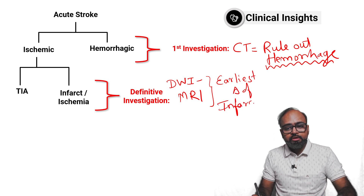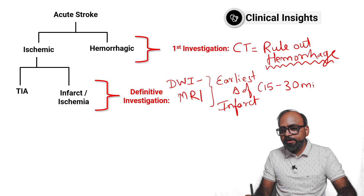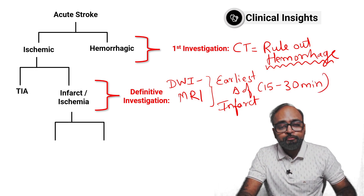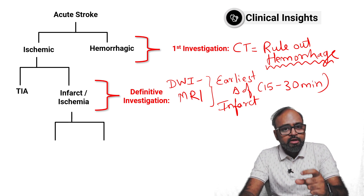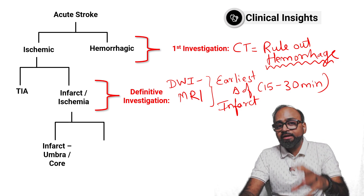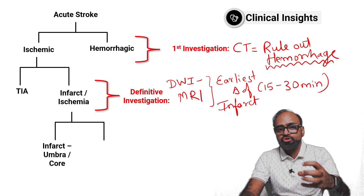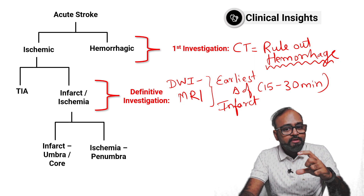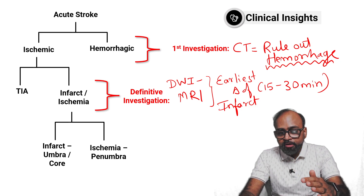It is possible on a diffusion-weighted MRI as early as 15 to 30 minutes from onset. So that is the utility of MRI. Now that you have diagnosed an infarct or there is an area of ischemia, you want to measure the blood flow at that affected area because you want to identify which is the dead infarcted area — this is called the umbra or the core — but you are more interested in looking at the size of the penumbra where the brain parenchyma is not yet dead. It is ischemic.